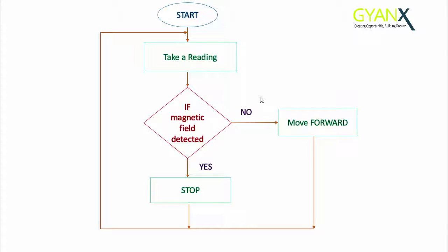We get only two possibilities. Our flowchart would be: start, take a reading from the sensor, meaning the Hall sensor.